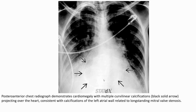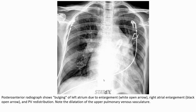This radiograph demonstrates, on the lateral view, multiple curvilinear calcifications indicated by the black solid arrow, projecting over the cardiac shadow, consistent with calcification of the left atrial wall related to long-standing mitral valve stenosis. This radiograph also shows bowing of the right atrium due to right atrium enlargement, and pulmonary venous redistribution with dilatation of the upper pulmonary vessels.